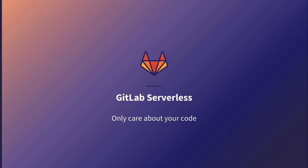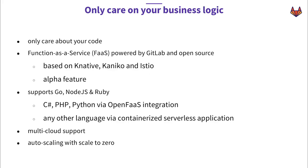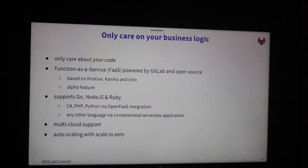Last but not least is GitLab serverless, also called function as a service. It basically means you just need to care about your code - you write your code, write your business logic, and don't care about how to containerize it, build it, or deploy it. It's completely done in the back end. It's based on open source tools: Knative, a serverless stack on top of Kubernetes; Kaniko, which we already learned about; and Istio, a service mesh for routing requests to different versions.